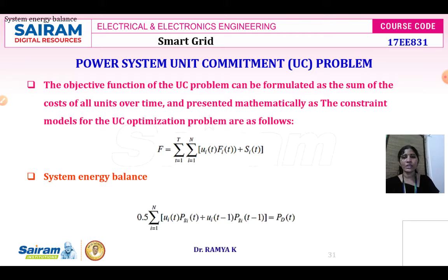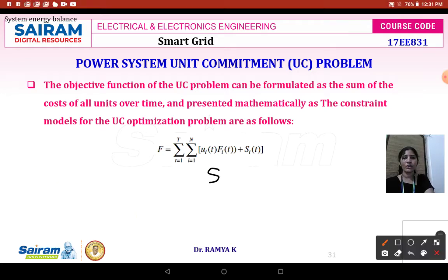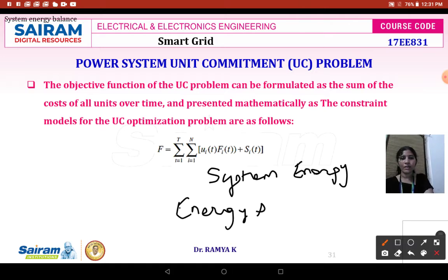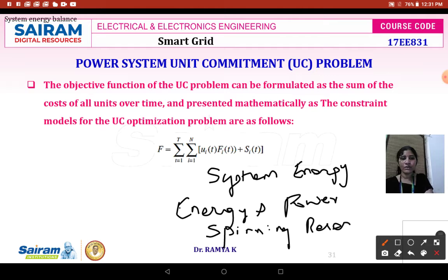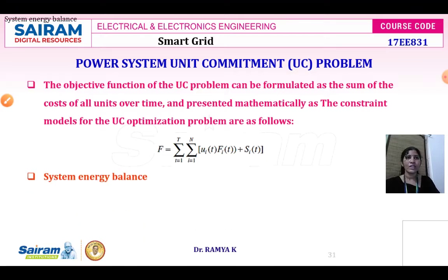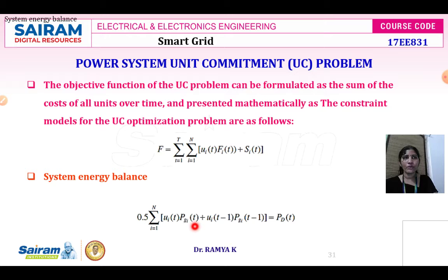When considering the unit commitment problem, the first constraint is the system energy balance. The system energy balance formula is: 0.5 summation i equals 1 to N of [ui(t) times PGi(t) plus ui(t-1) times PGi(t-1)] equals Pd(t).